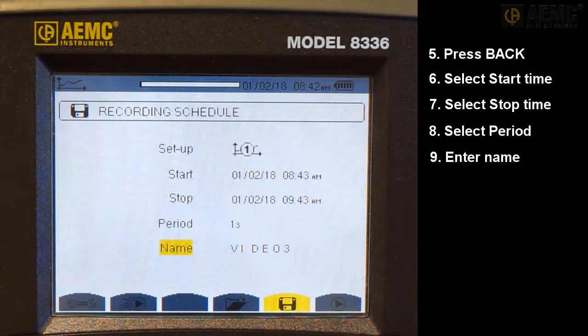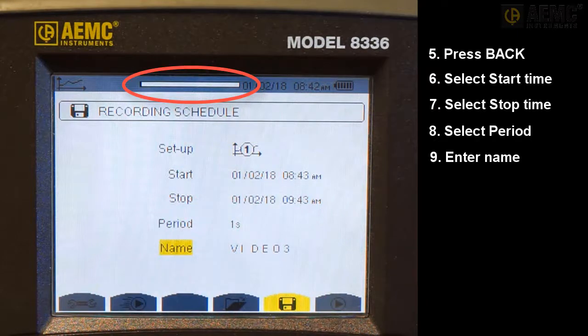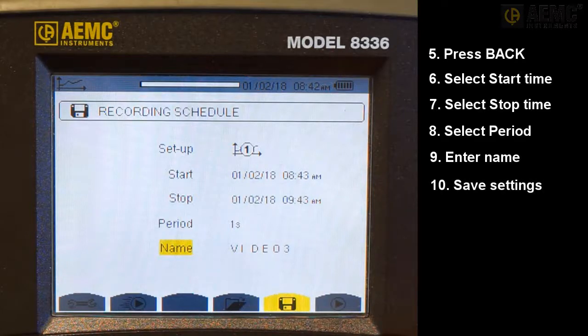Note the Memory Usage bar at the top of the screen. This indicates how much memory is available for storing recordings. If this indicates little free memory remains, return to the Recording List screen and delete one or more stored recordings. Press the last yellow Function button on the right to write the settings to the instrument.